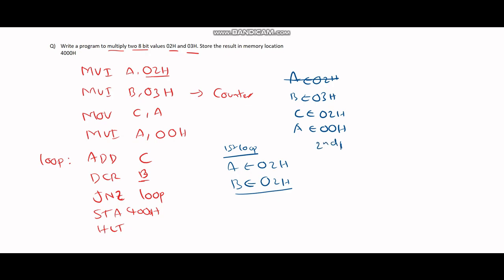So in the second iteration, we've added C to A again. The value in C is 02, the value in A is also 02, which means we now get 04H. And then we again decrease the value in register B. Now it comes back to 01H.